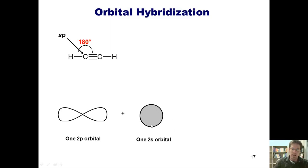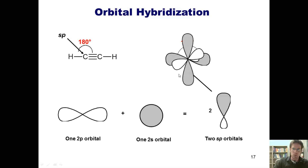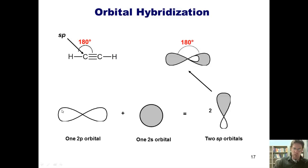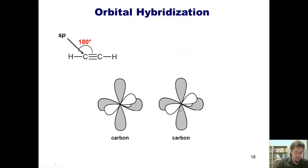We've taken one 2p orbital and one 2s orbital and combined them to form two sp orbitals. When these sp orbitals are placed on the carbon atom they form a nice 180 degree angle linearly. The unused two p orbitals go perpendicular to the plane, 90 degrees apart from each other. So this carbon atom used one of its 2p orbitals; the other two 2p orbitals remain unused, perpendicular to each other and to the plane occupied by the two individual sp orbitals.